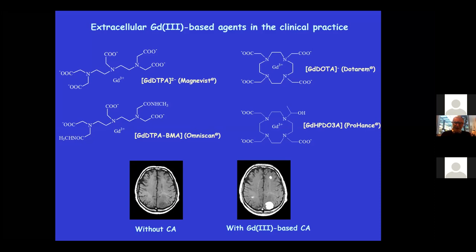Chemists know that gadolinium ion has the highest number of unpaired electrons and therefore the highest paramagnetism. However, gadolinium is not an endogenous metal, it is toxic, and therefore must be administered to living systems under the form of highly stable chelates. These are some examples of chelates introduced in the 80s for different clinical uses. Anytime there is the need to see a tumor lesion in the brain, for instance, one uses these agents and they appear in T1-weighted images as hyper-intense regions — something that would be hardly detected without the contrast agent.